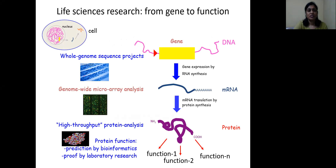After life science research understood that genes are responsible for the entire functions of the cell, people started focusing to know more about the genes of various cells and organisms. It was also identified that genes are encoded by the process of central dogma, where genes are first transcribed and then translated into proteins. Proteins are responsible for various functions of the cell.